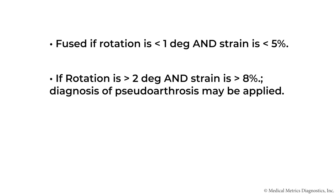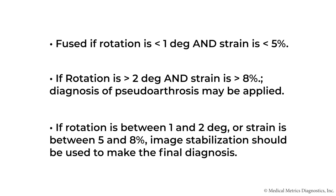If rotation is greater than two degrees and strain is greater than eight percent, then a diagnosis of pseudoarthrosis may be applied. There is also a gray zone where rotation may be between one and two degrees, or the strain is between five and eight percent. In such a scenario, the protocol recommends that image stabilization be used to visualize any residual motion and make the final diagnosis.